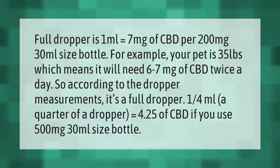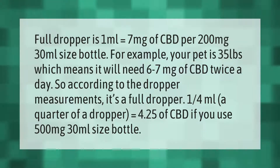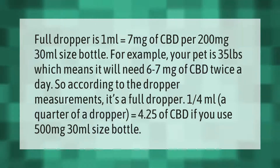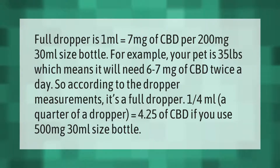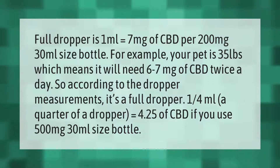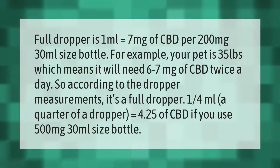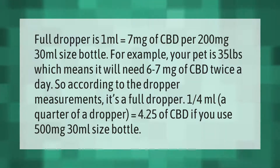A full dropper is one milliliter, which equals seven milligrams of CBD per 200 milligrams, 30 milliliter size bottle. For example, if your pet is 35 pounds, it will need six to seven milligrams of CBD twice a day. According to the dropper measurements, that is a full dropper. One quarter of a milliliter — a quarter of a dropper — equals 4.25 milligrams of CBD.